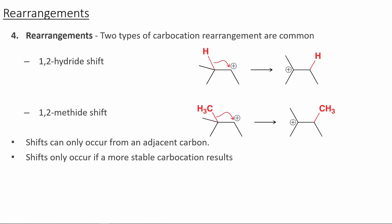There are two main types of carbocation rearrangements. You always want to look at the carbon the carbocation is on and figure out if there's a more substituted carbon next door. In a 1,2-hydride shift, the electrons between the carbon and hydrogen move over to form a new carbon-hydrogen bond, resulting in the carbocation forming on the more substituted carbon. If we have a quaternary carbon next door with no hydrogen to shift, we instead have a 1,2-methide shift. Shifts can only occur from the adjacent carbon, and shifts only occur if a more stable carbocation results.